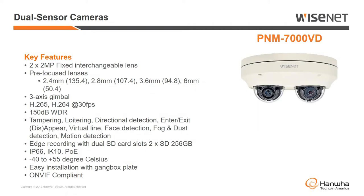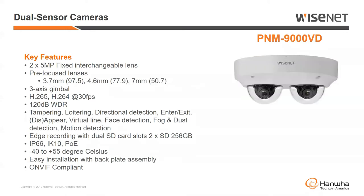The two models we have for the dual-head camera are the PNM-7000VD — a two-headed, 2-megapixel camera with interchangeable lenses. It's PoE-powered and outdoor vandal-rated. And then we have the PNM-9000VD, which is the higher resolution version — a 5-megapixel version with two 5-megapixel heads. Different lens options are available and besides that they have a very similar feature set.